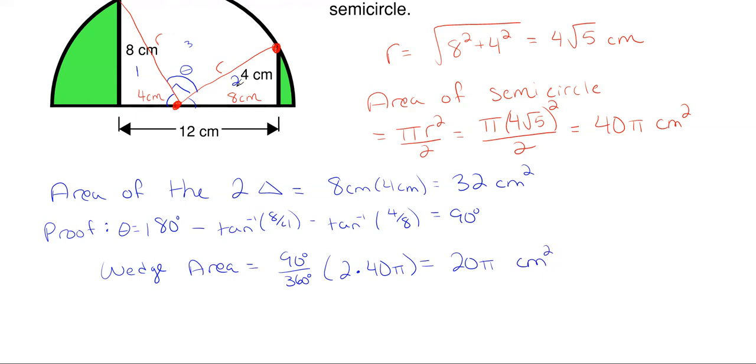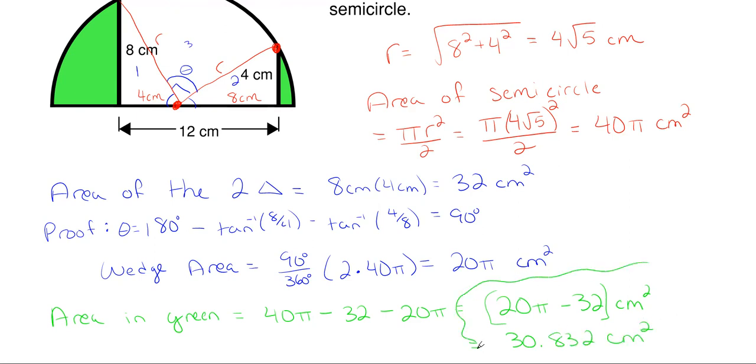All right so now we have the area of both these triangles, the area of my circle sector which is 20 pi squared and then I'm going to subtract those from my overall semicircle area. So the area in green would just be my semicircle area of 40 pi subtracting off the two triangles combined which is 32 centimeters squared and then subtracting off the area of that circle wedge which is 20 pi and we end up with exactly, if you want to write it out in exact terms it would be 20 pi minus 32 centimeters squared or if you want to approximate it it would be this which comes out to be 30.832 centimeters squared and that would be my area in green.